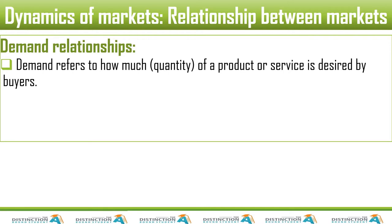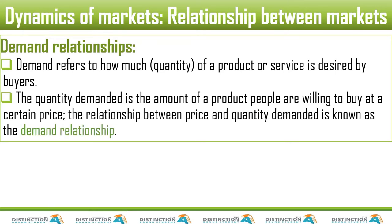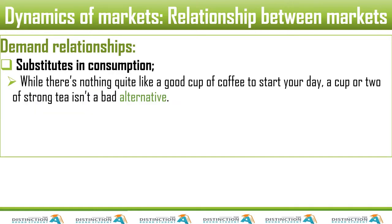Demand relationships: demand refers to how much of a product or service is desired by buyers. Quantity demanded is the amount of a product people are willing — and willingness means you are also able — to buy at a certain price. The relationship between price and quantity demanded is known as a demand relationship.